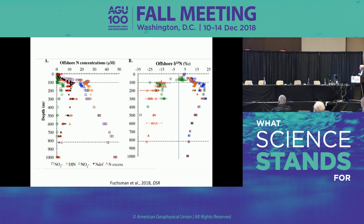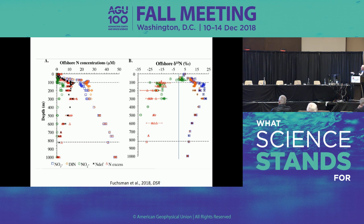Now let's switch to isotopes. I'm showing the concentration of different nitrogen species and their isotopic compositions from a paper by Fuchsman et al., just published in DSR. Blues are nitrate, greens are nitrite, oranges are DIN (nitrate plus nitrite), reds are the biologically produced N2 from denitrification measured by mass spectrometry, and blacks are the deficit. The deficit should equal the biologically produced N2, and that's roughly what we see.